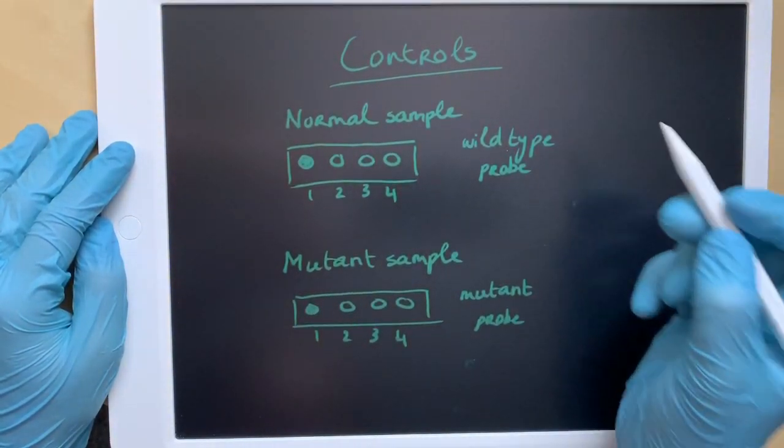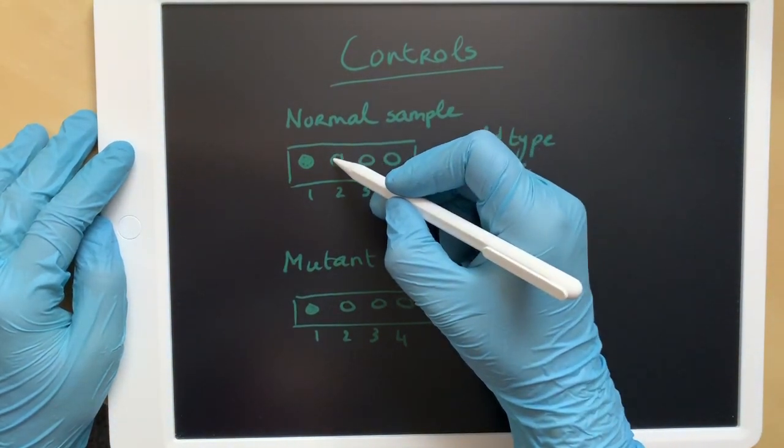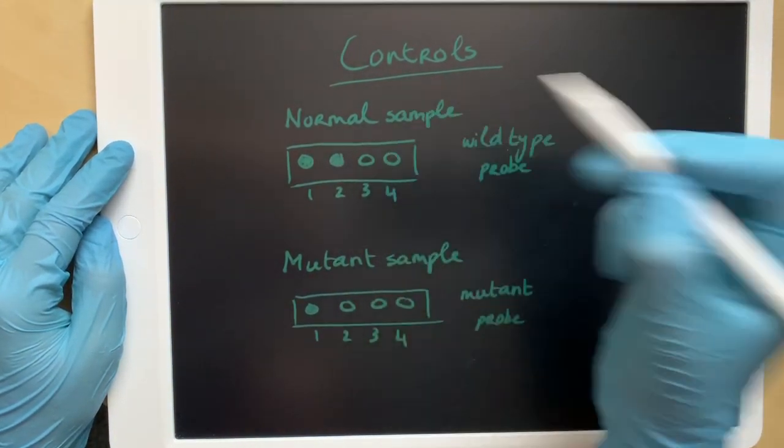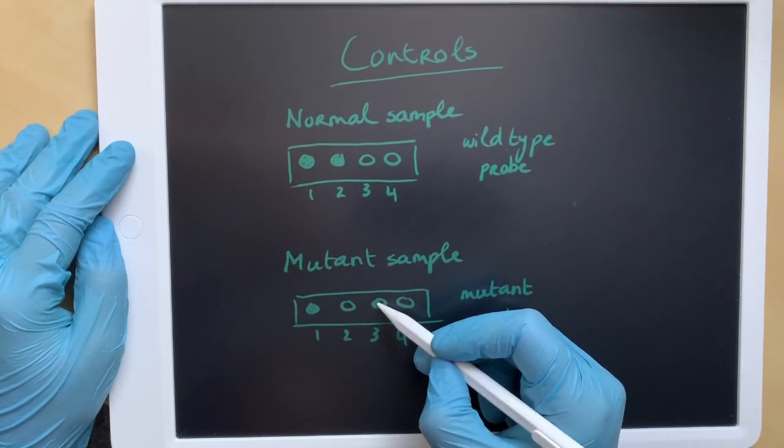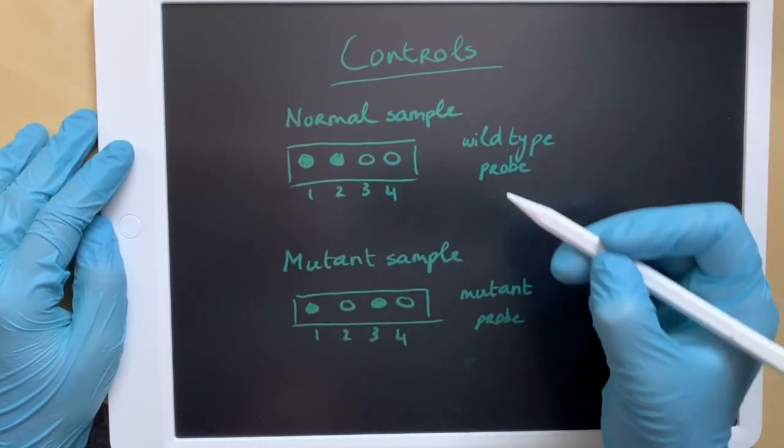The second control is done by adding the wild-type probes to both samples. The third control is done by adding mutant probes to both samples. These controls are used to check whether or not the probes can bind to the DNA.